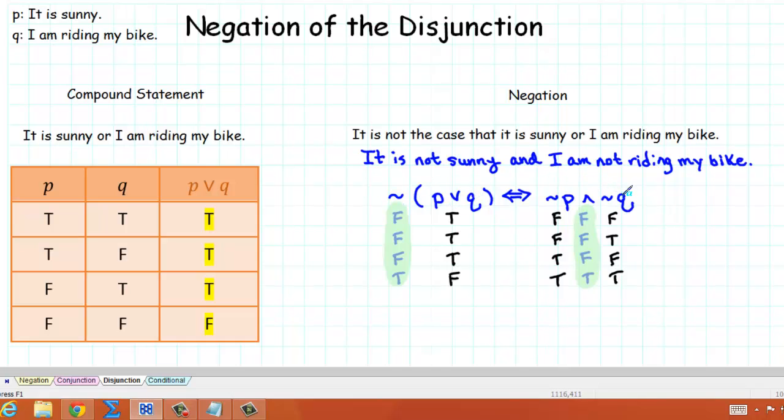This is very similar to what we saw in sets, where we had A union B complement. We distributed the complement through the parentheses, and we got A complement intersection B complement. And this was part of De Morgan's Law. So De Morgan's Law applies to sets. De Morgan's Law also applies to logic. They carry the same name. Both of these demonstrate De Morgan's Law.